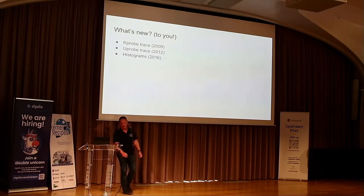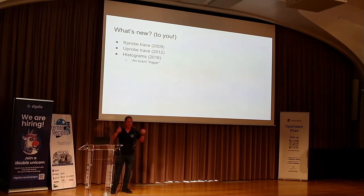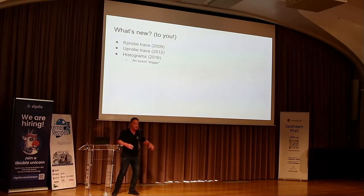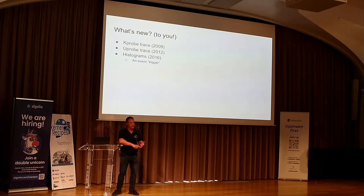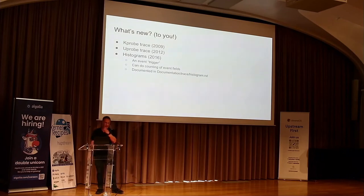Next, histograms. This has been around since 2016. Again, new to you, not new to me. They're enabled by what is called the event trigger. It's basically a file in TraceFS under every single event. You have the events directory, underneath that all the event group directories, and underneath those each event has a directory. In those you have the enable file, filtering, and one of them is 'trigger'.